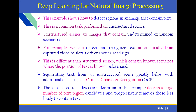This example shows how to detect regions in an image that contain text. This is a common task performed on unstructured scenes — images that contain undetermined or random scenarios. For example, we can detect and recognize text automatically from captured video to alert a driver about a road sign. This is different from structured scenes where the position of text is known beforehand. Segmenting text from an unstructured scene greatly helps with additional tasks such as optical character recognition, or OCR.